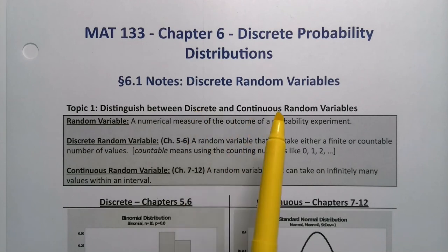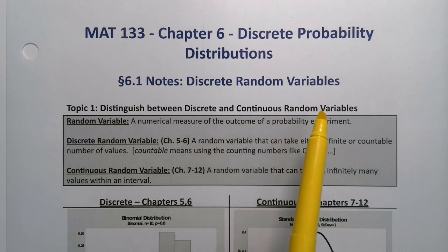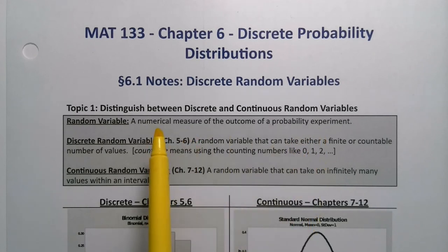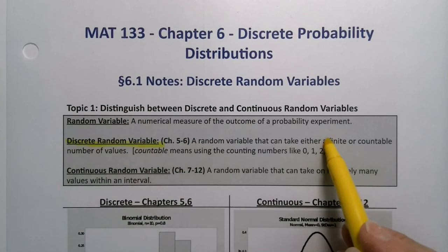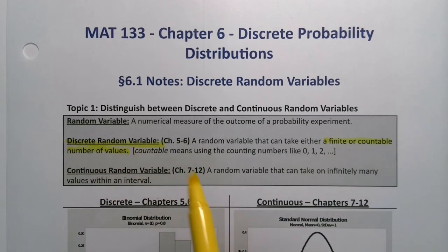These are random variables, however. They're related to the data we talked about back in Chapter 1, but they're not exactly the same thing because these will be random variables. They'll be numerical measures of the outcome of a probability experiment. So they're numerical, of course, so they're quantitative. In Chapters 5 and 6, we're working with discrete random variables. That's a random variable that can take on a finite or countable number of values. Countable can be infinite.